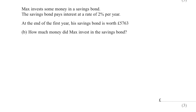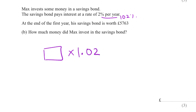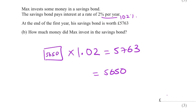Max invests some money in a savings bond paying 2% per year, so the multiplier is 1.02. At the end of year one his savings bond is worth £5,763. We multiplied by 1.02 for one year to get 5,763, so the original amount is 5,763 ÷ 1.02 = £5,650.